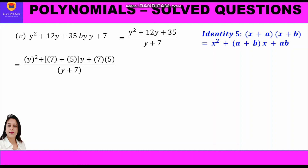In place of x we write y. We substitute in the identity and write in the numerator: y² + (7+5)y + (7×5) upon (y+7). The factors are (y+7)(y+5) upon (y+7). Now (y+7) cancels, and we are left with the answer y plus 5.